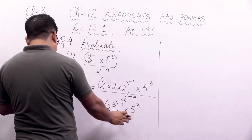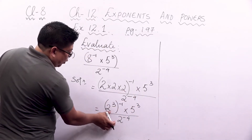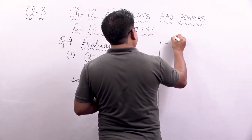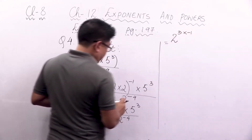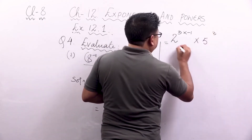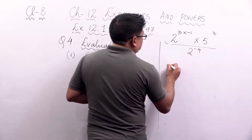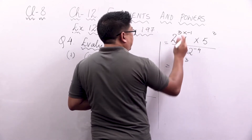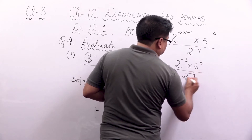Now we have to solve the power of powers. So what we are going to do is: 2 to the power 3 into minus 1, into 5 to the power 3, divided by 2 to the power minus 4. If we solve 3 into minus 1, we get 2 to the power minus 3, into 5 to the power 3, divided by 2 to the power minus 4.